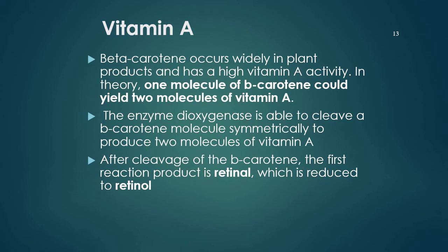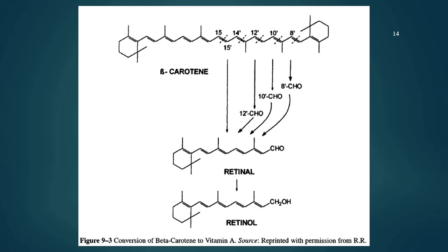After the cleavage of beta-carotene, the first fraction product is retinaldehyde, which is then reduced to retinol. Looking at the beta-carotene structure, when you disconnect at bond 15, you get different portions, and these correspond to different forms of retinol, depending on where the disconnection occurs.